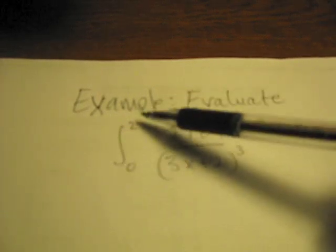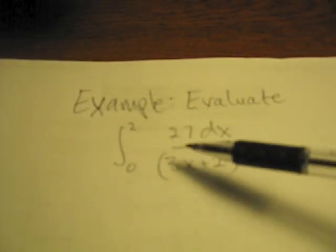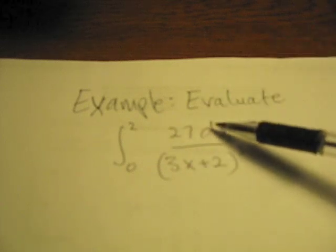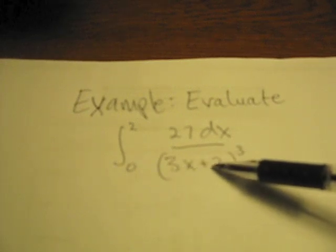Notice that this is a definite integral because we do have limits of integration. So we're asked to evaluate this definite integral. You'll see that this consists of a quotient, 27 dx over (3x plus 2) cubed.